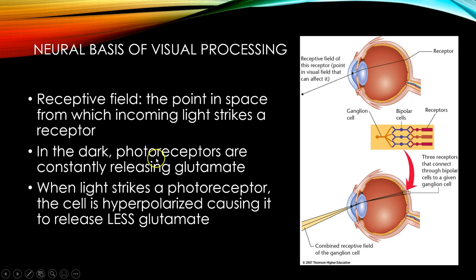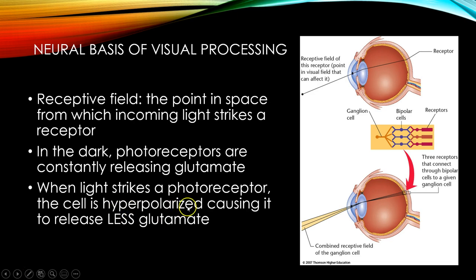In the dark, photoreceptors are constantly releasing neurotransmitter — glutamate — which is an excitatory neurotransmitter. When light strikes a photoreceptor (the rods and cones on the retina), the cell is hyperpolarized, causing it to release less glutamate.